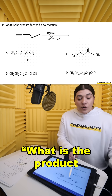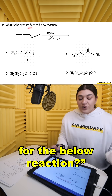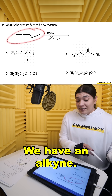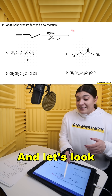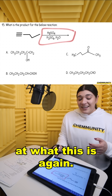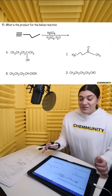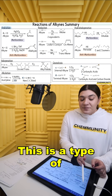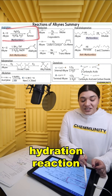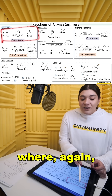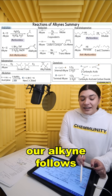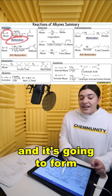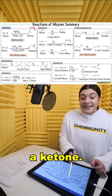Number 15. What is the product for the below reaction? We have an alkyne, and let's look at what this is again. This is a type of hydration reaction where our alkyne follows Markovnikov's rule, and it's going to form a ketone.